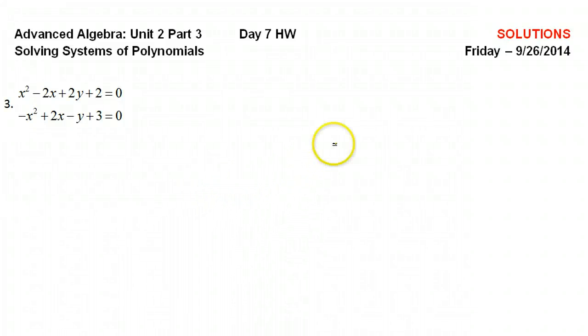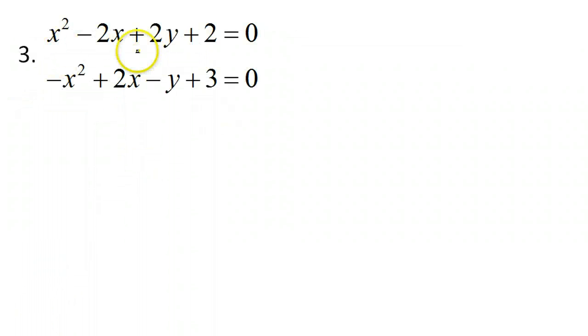All right, and this is part two of our lesson on solving systems of polynomials. So let's identify what we're dealing with here. This is quadratic, and we have another quadratic. So that means we're dealing with two parabolas.